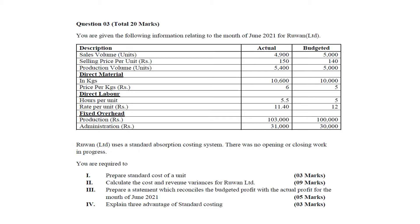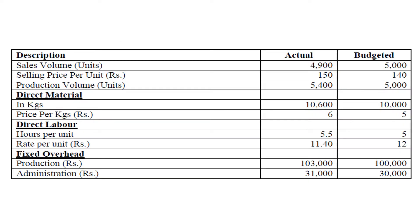Most of the marks are allocated for calculating variances and preparing the operating statement, but to prepare them we must have the standard cost for a unit. Now let's prepare the standard cost of a unit. The standard is based on the estimates of budgeted figures, so all estimates here are based on budgeted data. The selling price per unit in the budgeted figure is taken as the standard selling price, which is $140.